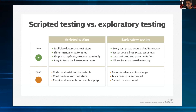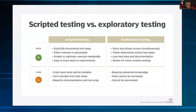In exploratory testing, testers can work simultaneously and in parallel. The tester determines the steps — there are no given steps. There is less preparation and documentation, and it allows the tester to be more creative rather than just executing regression test cases. The tester is given full discretion to use their own testing mechanisms.